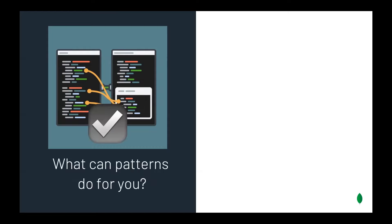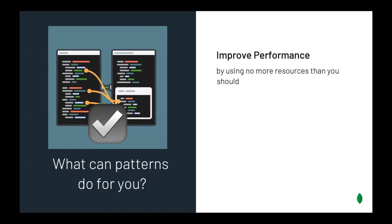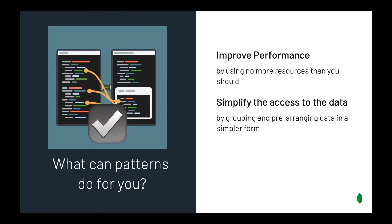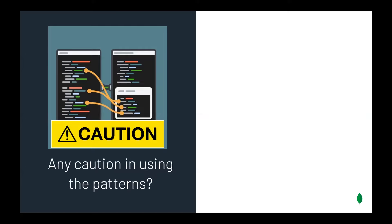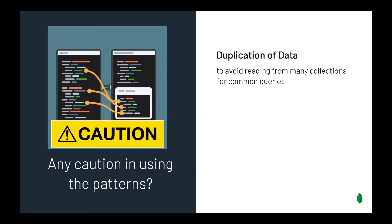What can patterns do for you? The most common benefit is improving the performance of your schema. Some patterns also help simplify access to data by grouping or pre-arranging data in a simpler form. Are there any cautions? Yes — some patterns bring duplication of data. While we may have been told duplication is not a good thing, especially when trying to maintain normal form in your model, that's often not the case. There are situations where duplication of data is actually desirable.